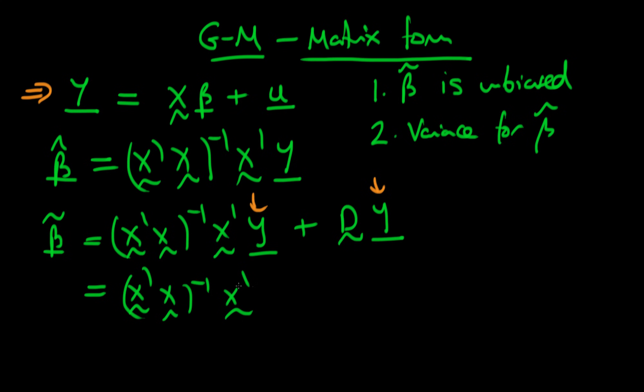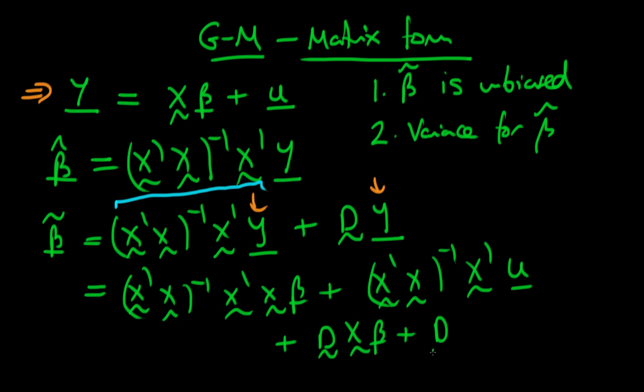Now substituting in for Y, I get X beta plus now I've got (X'X)^(-1) times X'u. So I've substituted for Y in that first half of our relationship. Writing in for d we can write this as d times X beta plus d times u.